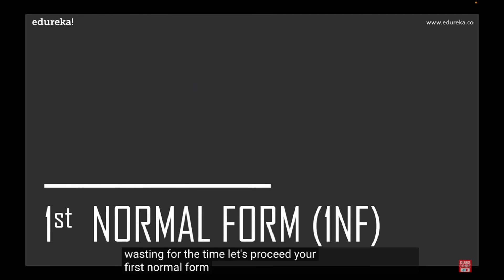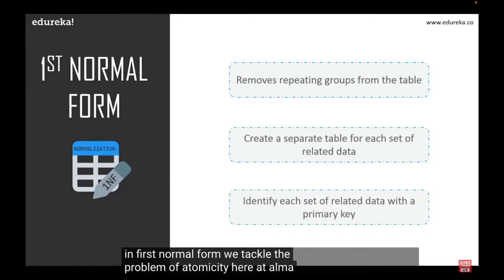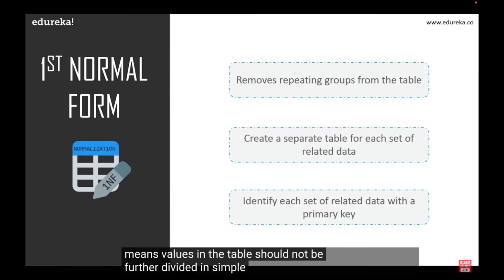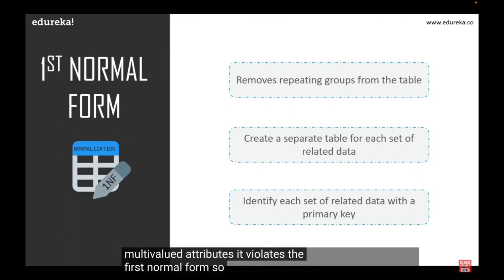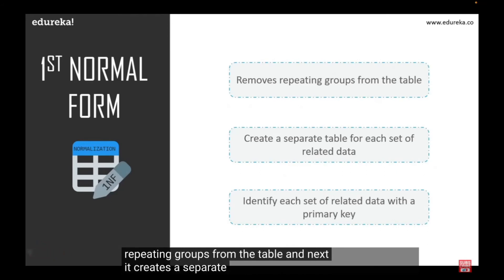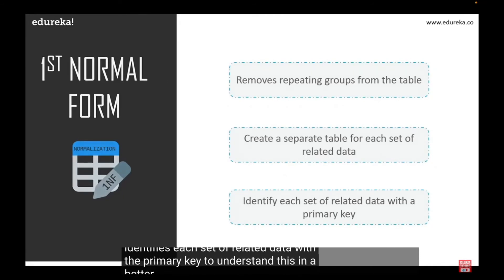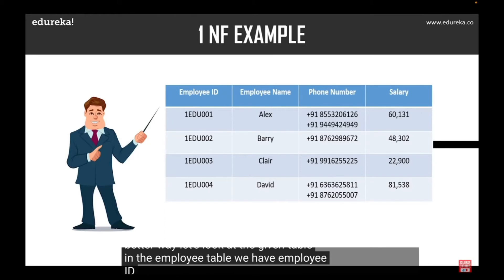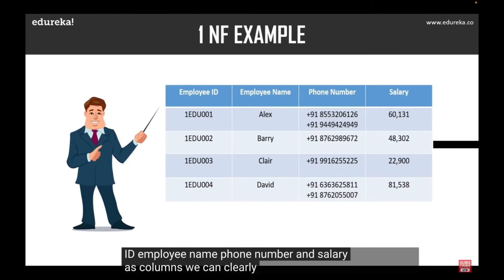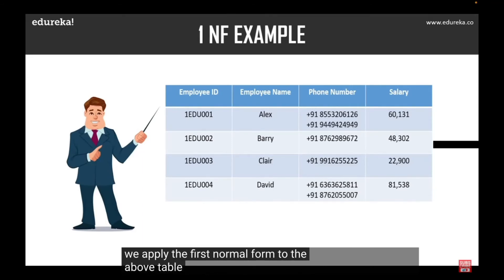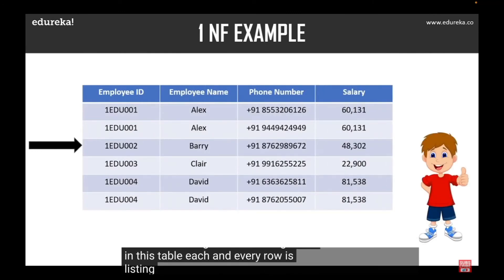First Normal Form (1NF) tackles the problem of atomicity — values in the table should not be further divided; a single cell cannot hold multiple values. If a table contains multi-valued attributes, it violates 1NF. 1NF removes repeating groups, creates separate tables for each set of related data, and identifies each set with a primary key. For example, if an employee table has a phone_number column with two values in one cell, it violates 1NF. Applying 1NF makes each and every row distinct, with no cell holding multiple values.